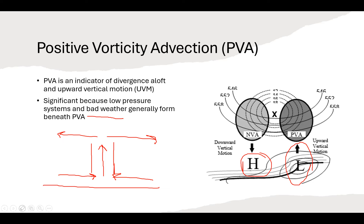At 500 millibars, 18,000 feet above the ground, the wind is basically going to be blowing parallel to these height contours — there's no friction turning these winds at all. Let's say you're at a location where your vorticity value is 10. This wind at 500 millibars is going to send higher or more positive vorticity values into your area. The max vorticity value of 18 is going to get blown toward that point — that's what results in positive vorticity advection.